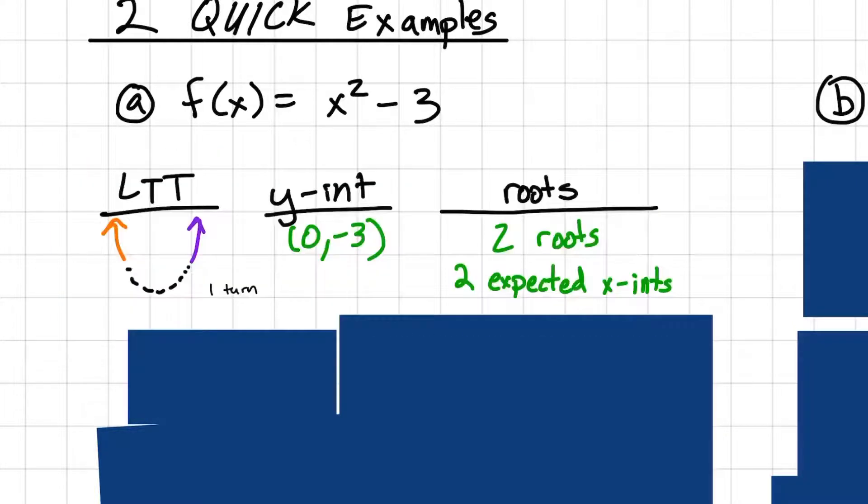So we have our leading term test tells us that we're going to be rising to the right because our leading coefficient is positive, and we're going to then have same end behavior and rise to the left because we have an even degree. Next, we know that because we have this even degree, this degree of 2, that we should just have one turn. We have two roots, and we expect two of those to be x-intercepts. We have a y-intercept at 0, negative 3. Because if I plug in a 0, I'm just left with this negative 3. So 0, negative 3.